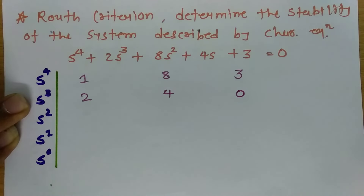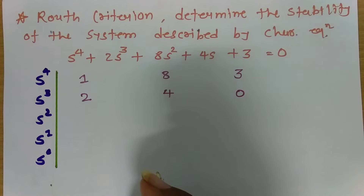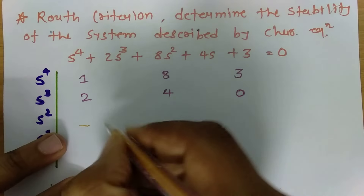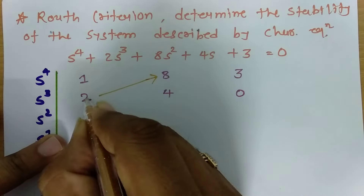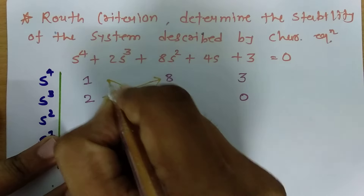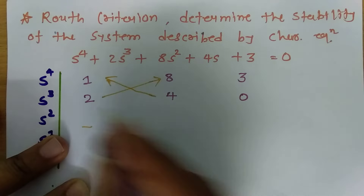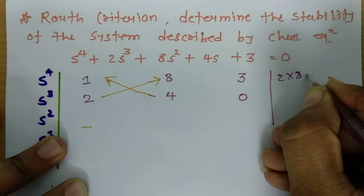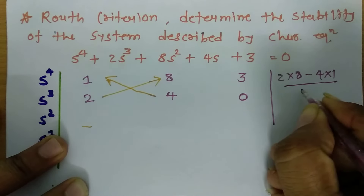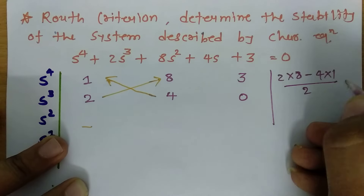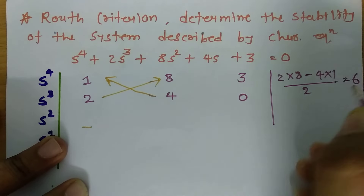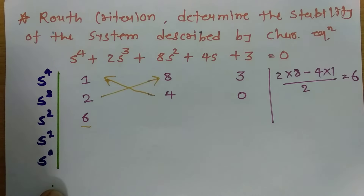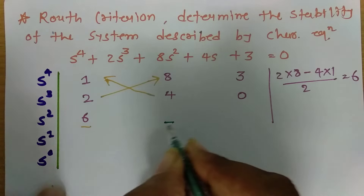For the s⁴ row: first element is 1, next element is 8, then 3. For the s³ row: first element is 2, next element is 4, then 0. Now we calculate other elements by cross multiplication: (2×8 − 4×1) divided by 2 = (16 − 4)/2 = 12/2 = 6. So this element is 6.